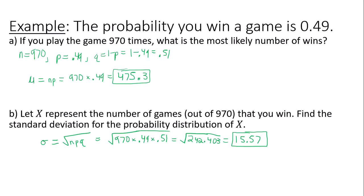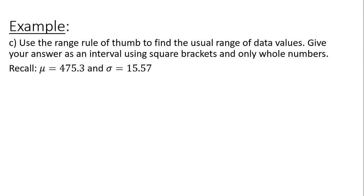That is the mean and standard deviation of this binomial distribution or binomial experiment. Now I want to go through and use the range rule of thumb to find the usual range of data values. Give your answer as an interval using square brackets and only whole numbers. So I have my mean and standard deviation that I previously just calculated.